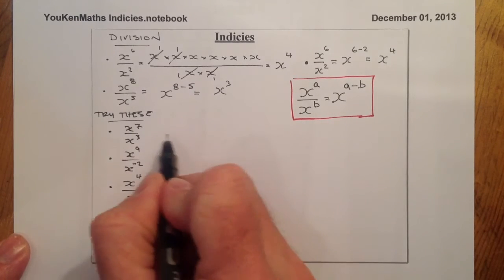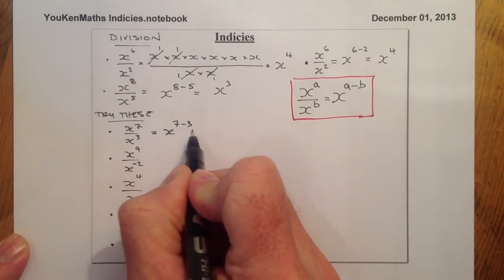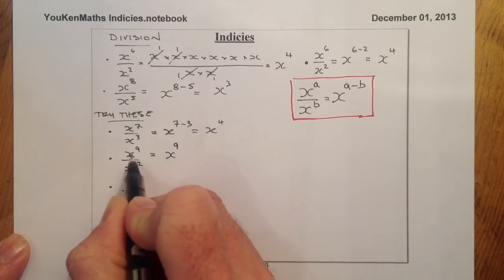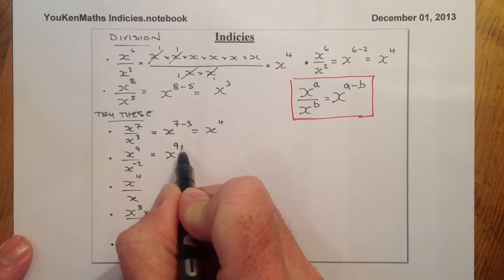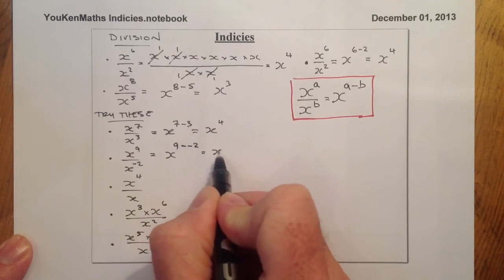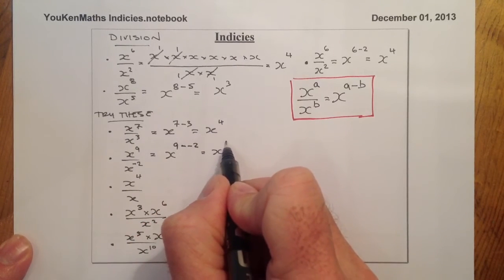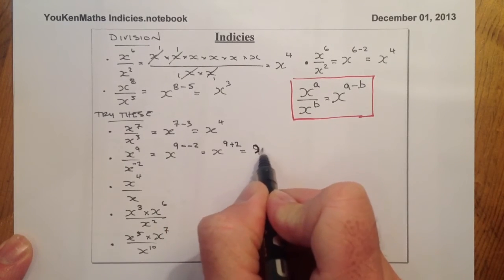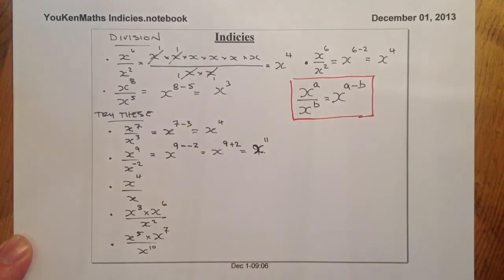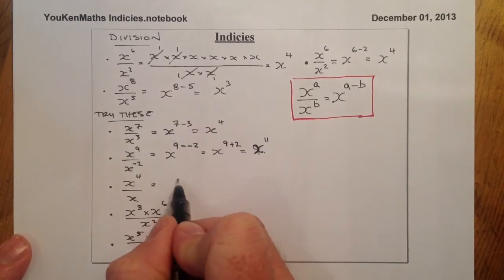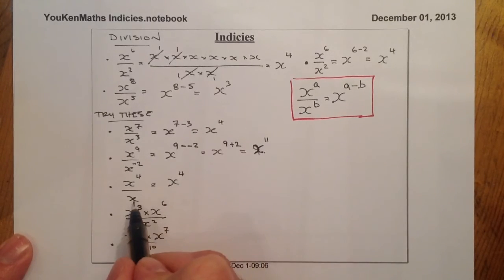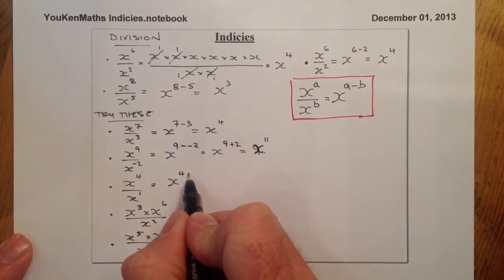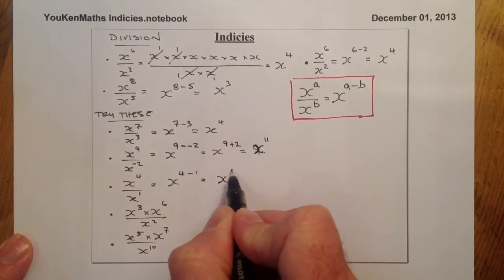Here are the answers. x⁷ divided by x³ gives x to the power of 7 minus 3, which is x to the power of 4. The second one — x⁹ over x to the power of minus 2 — requires care with integers: subtracting minus 2 is the same as adding 2, so that gives x to the power of 11. For x⁴ over x, remember that a lone x has a power of 1, so that's 4 minus 1, giving x to the power of 3.